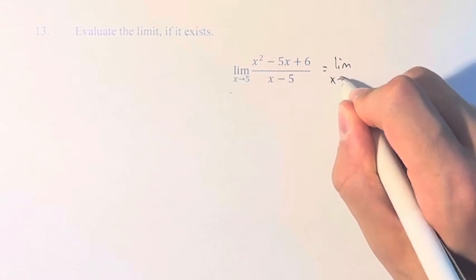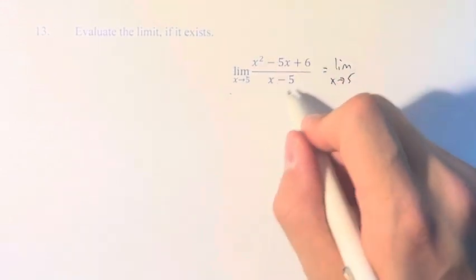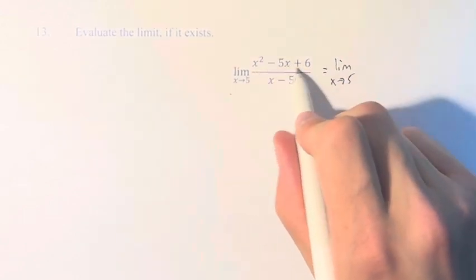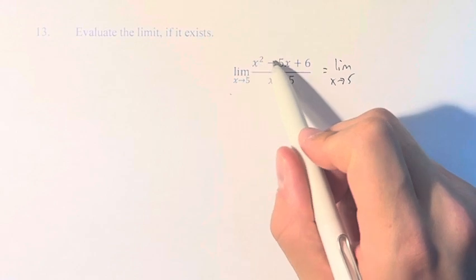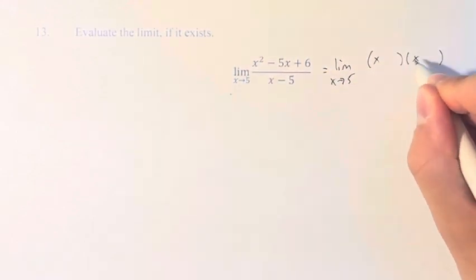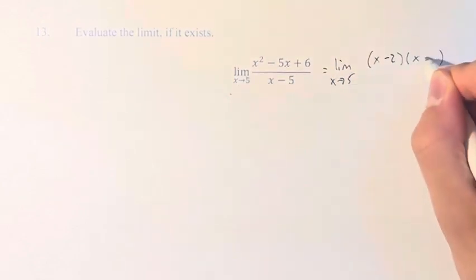So what we do is we factor the numerator in hopes that we can simplify it with the denominator and eliminate this term. So on the numerator, we have x squared minus 5x plus 6, so we're factoring a trinomial. We need two numbers that multiply to 6, add to negative 5, that's negative 2 and negative 3.